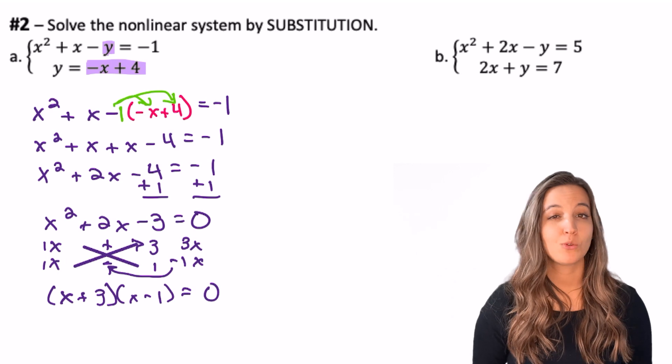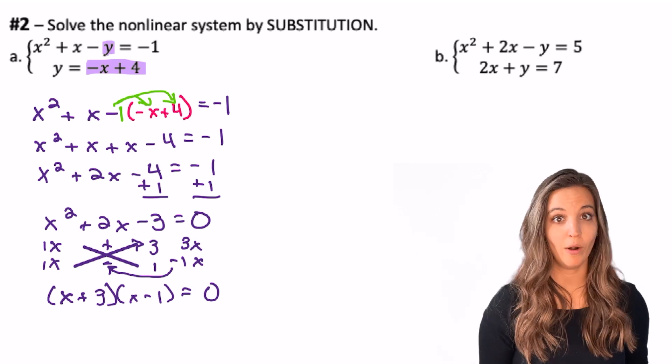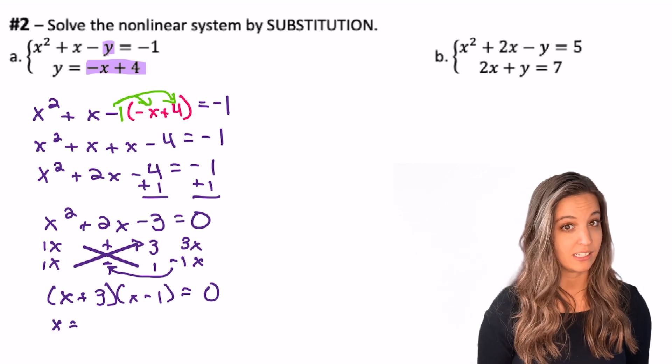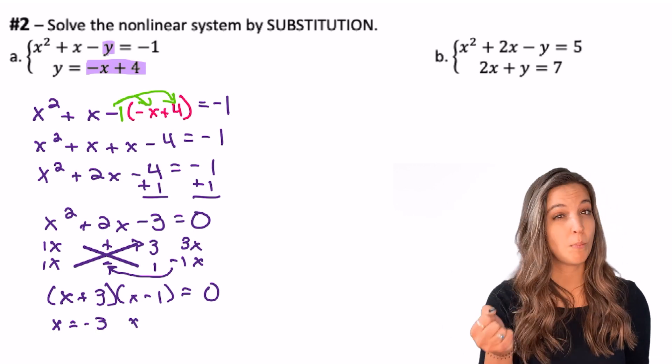Looks like this factors into x plus 3, x minus 1 equals zero. All right, what are my solutions then? x equals negative 3, x equals positive 1.